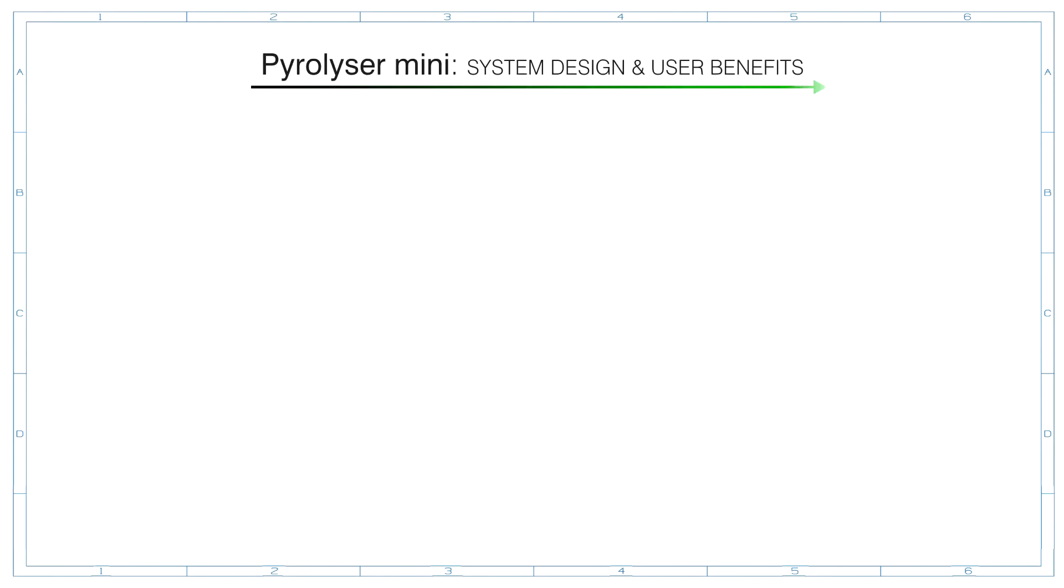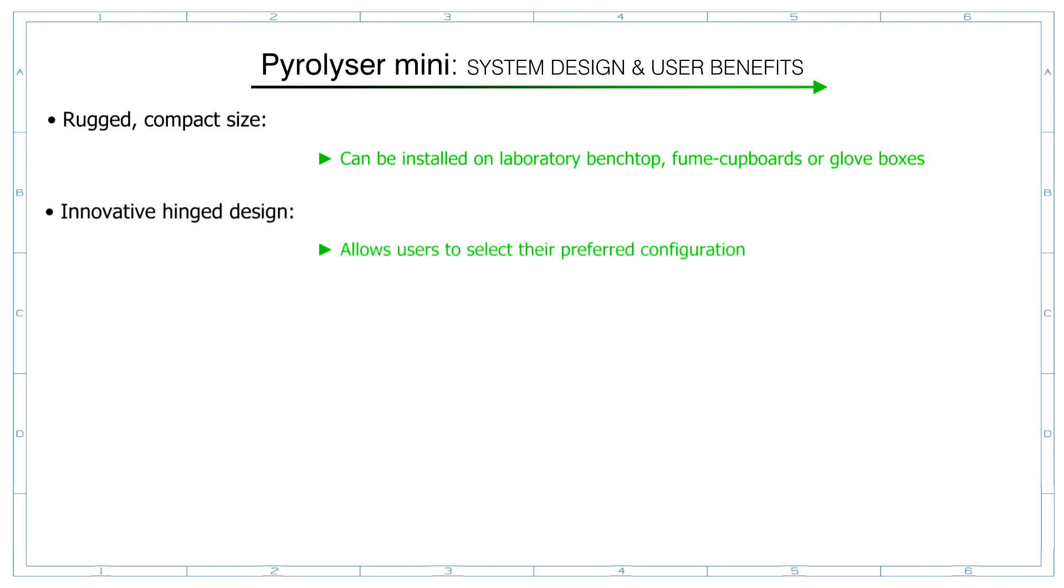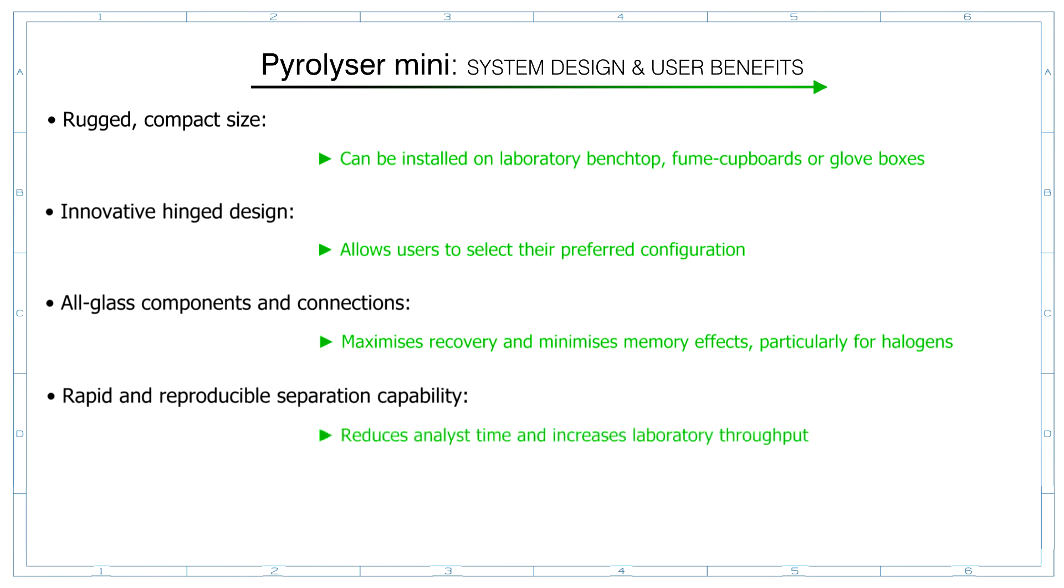The pyrolyser mini system is a tested technology which provides key benefits for analytical laboratories. Rugged and compact size can be installed on laboratory benchtop, fume cupboards or glove box. Innovative hinged design allows users to select their preferred configuration. All glass components and connections maximizes recovery and minimizes memory effects, particularly for halogens. Rapid and reproducible separation capability reduces analyst time and increases laboratory throughput. Capacity for a wide variety of analytical samples permits use across a range of sample activities.